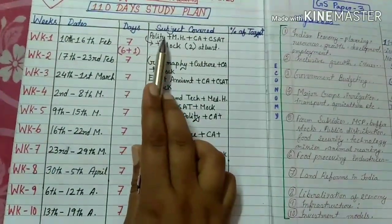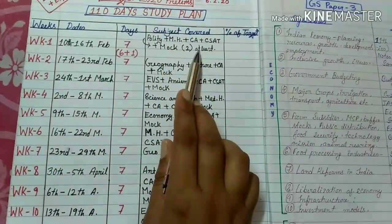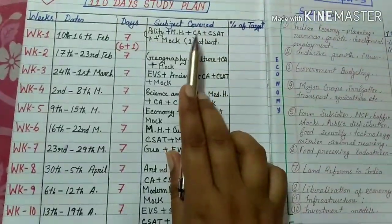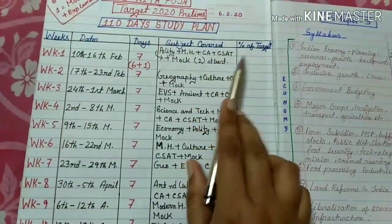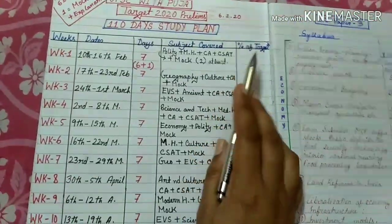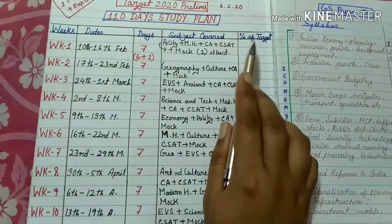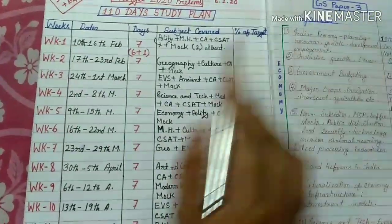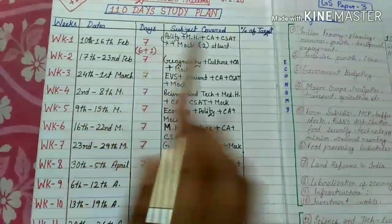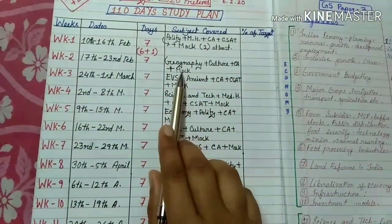The first week covers the subjects: polity, modern history, current affairs, CSAT, and mock test — at least two to three. After completing this target, you have to put the percentage of your target in these sections, whether it is 70 to 80 or 90 to 100. The second week starts from 17th to 23rd February, covering geography, culture, current affairs, and mock.